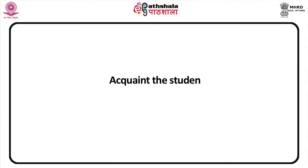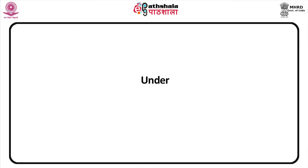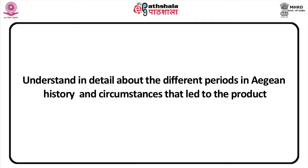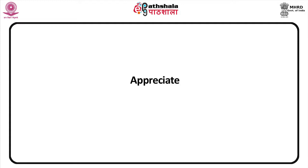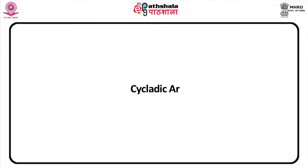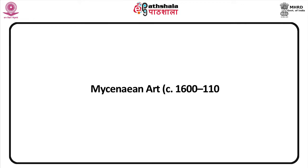In this lesson our objectives are: to acquaint the student about the significance of Aegean art and architecture in the said period; to understand in detail about the different periods in Aegean history and circumstances that led to the production of art; and to appreciate the art and architecture of the civilization in the said period. We shall be discussing Cycladic art 2600 to 1100 BC, Minoan art circa 3000 to 1100 BC, and Mycenaean art 1600 to 1100 BC.